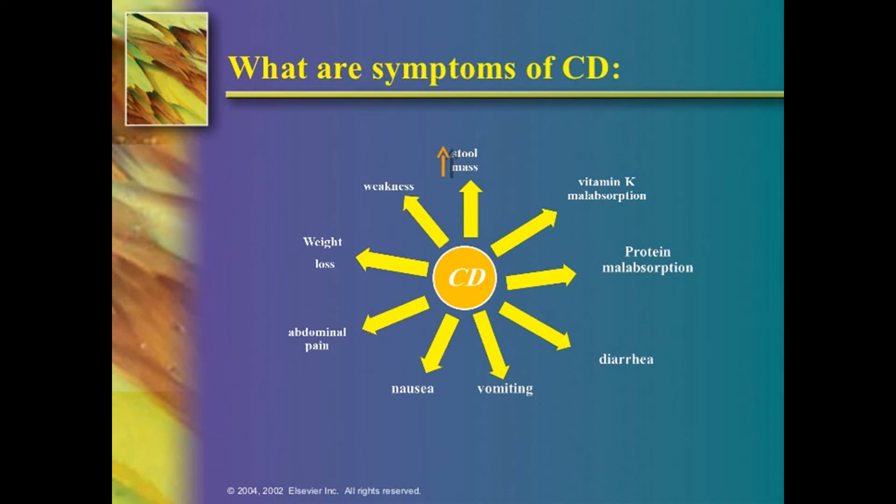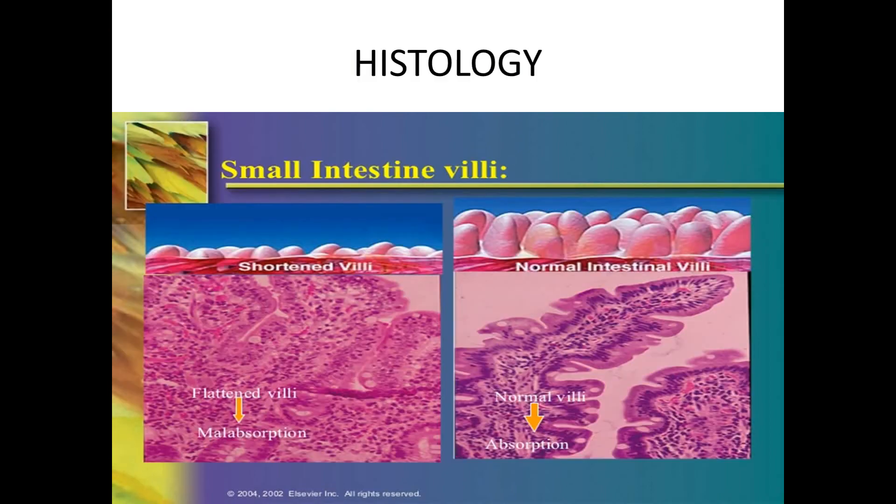As a result, stool mass increases. Vitamin K absorption decreases because it is a lipid-soluble vitamin; vitamin A is also decreased; iron is lost; vitamin E cannot be absorbed. The common symptoms of celiac disease include weakness, weight loss, abdominal pain, nausea, vomiting, and diarrhea.